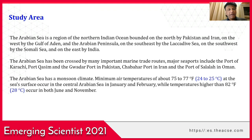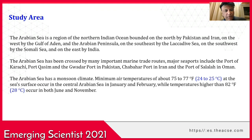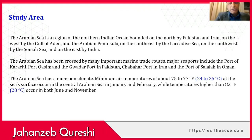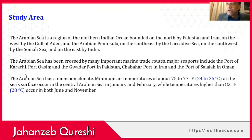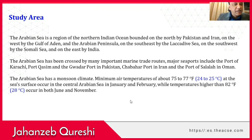The Arabian Sea has a monsoon climate. Minimum air temperatures of about 24 to 25 degrees Celsius at the sea surface occur in the central Arabian Sea in January and February, while temperatures greater than 28 degrees Celsius occur both in June and November.